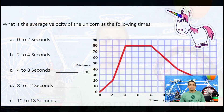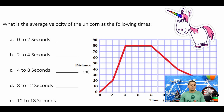The first graph I'm going to show you is a graph for velocity. I'm going to guide you through the easy process of finding the slope or constant of proportionality. This graph is for finding the velocity of a unicorn — distance over time. We have time intervals: 0 to 2 seconds, 2 to 4, 4 to 8, 8 to 12, and 12 to 18.